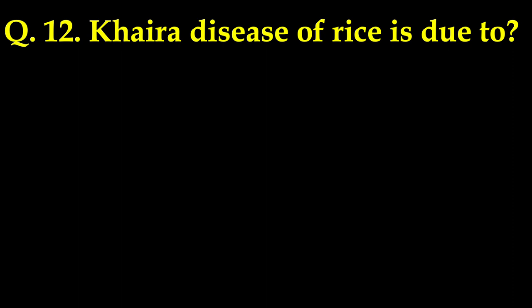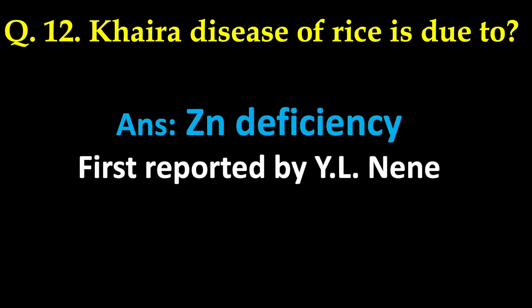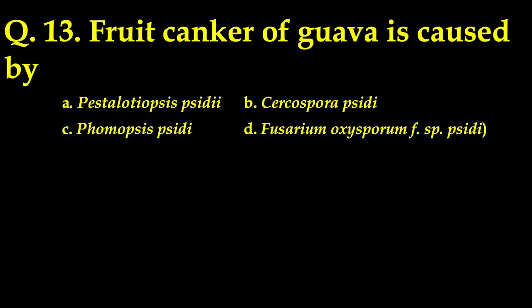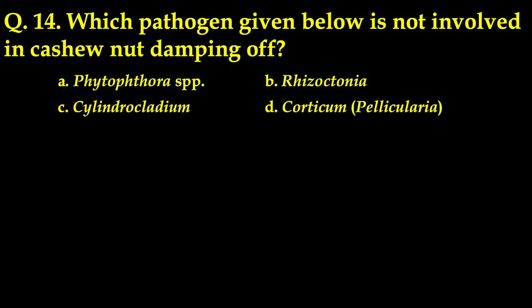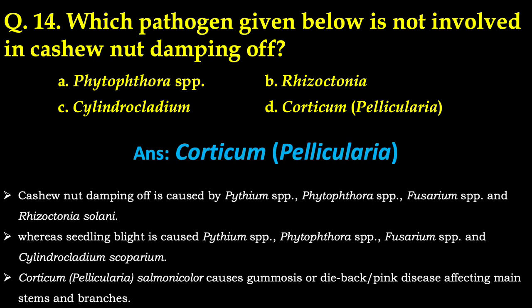Another question: khaira disease of rice is due to — the answer is zinc deficiency. This was first reported by Indian scientist Y.L. Nene. Fruit canker of guava is caused by — there were four options and the correct answer is Pestalotiopsis psidii.